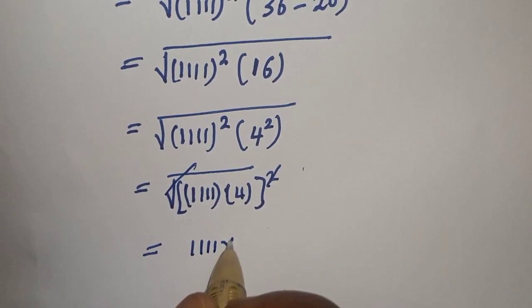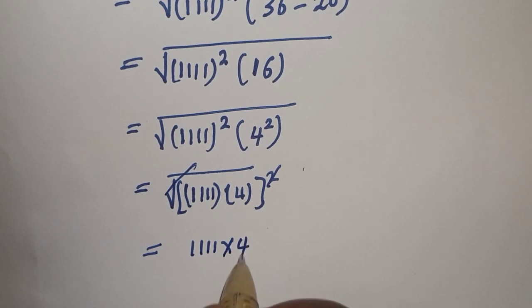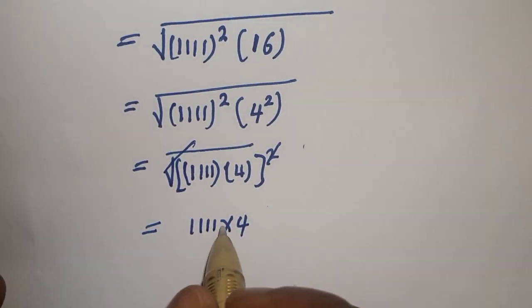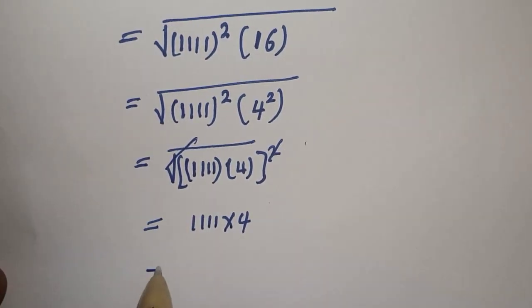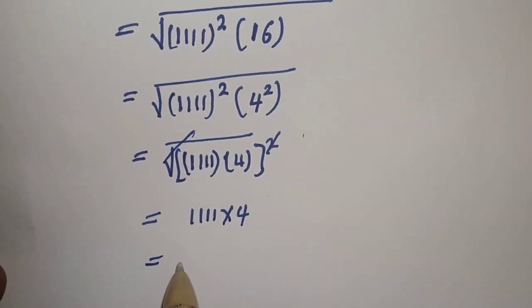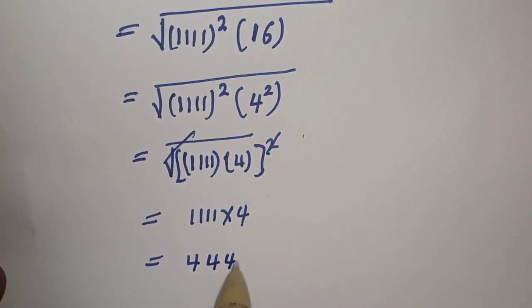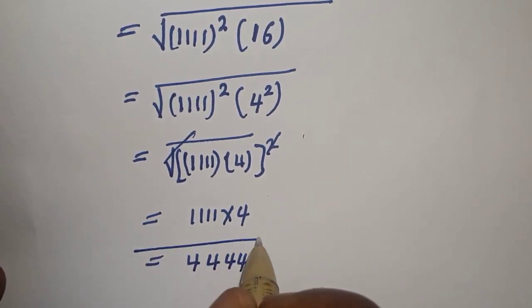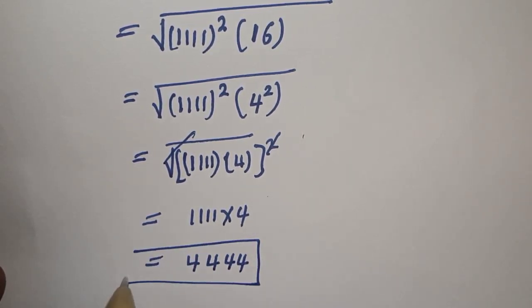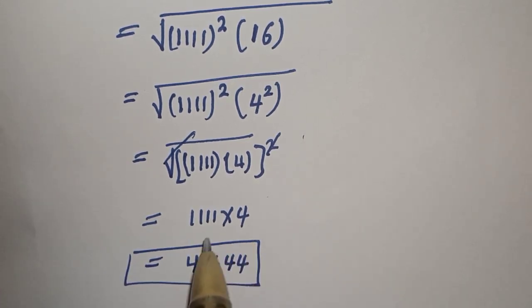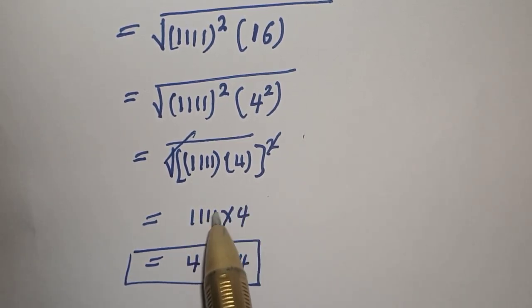1111 times 2 is 4, and if you multiply this by this we have 4444. This is the final answer. Thank you for watching, don't forget to like, share, comment and subscribe to my channel.